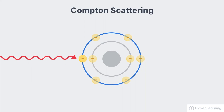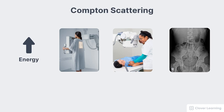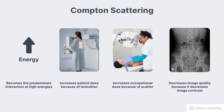Here's a summary of Compton scattering. Compton scattering occurs when the incoming photon interacts with a loosely bound outer shell electron — the electron is immediately knocked out of its orbit in a process called ionization, and the free electron is called the Compton electron. The remaining energy leaves the atom as a scattered photon called the Compton photon. Compton scattering occurs at all energy levels but becomes the predominant interaction at high energies. It increases patient dose because of ionization, increases occupational dose because scatter is being created, and decreases image quality by decreasing image contrast.